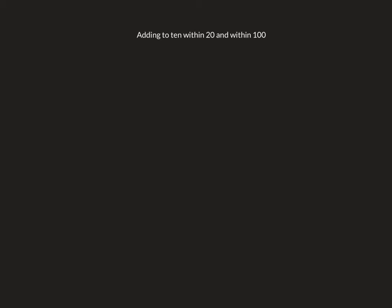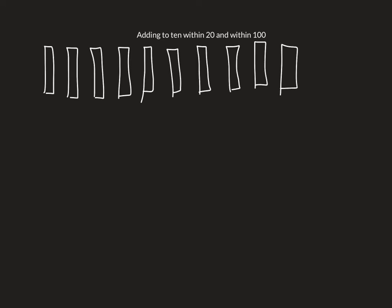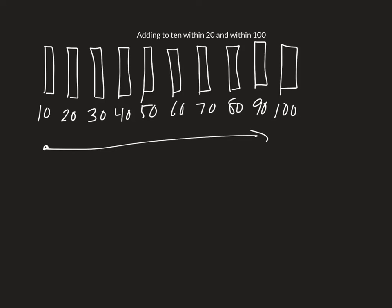So I'm going to start off by drawing 10 boxes, and then we're going to count by 10s using these boxes as our guiding posts. Okay, so let's take a look now and count by 10s from left to right. 10, 20, 30, 40, 50, 60, 70, 80, 90, 100.